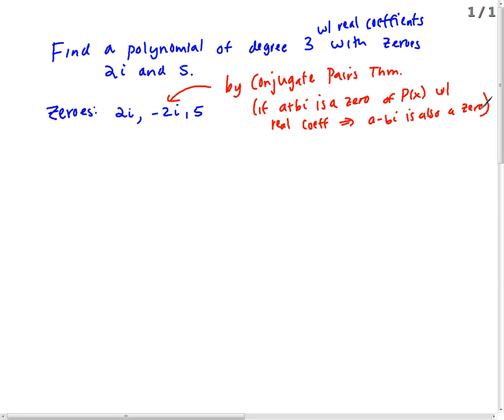So now we have three zeros and the degree is three, so we have all the ones we need. Now we need to expand it out. We write it as factors.